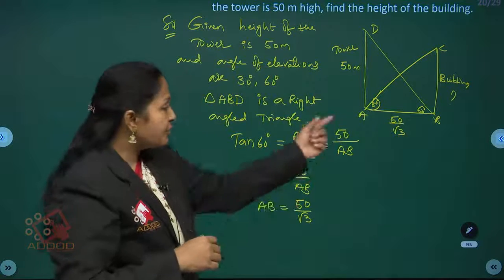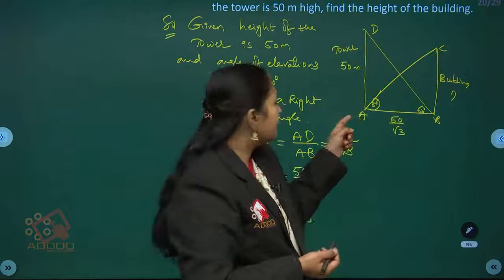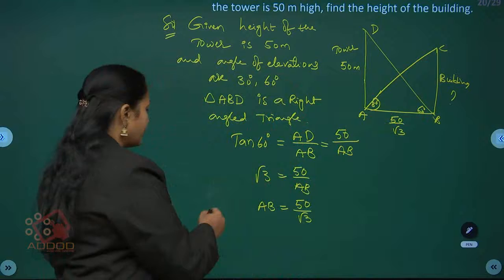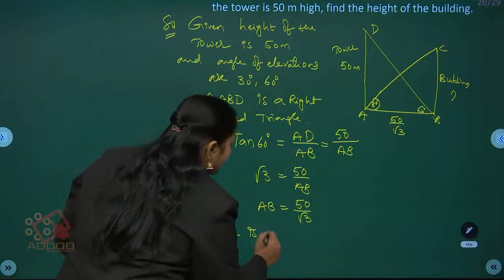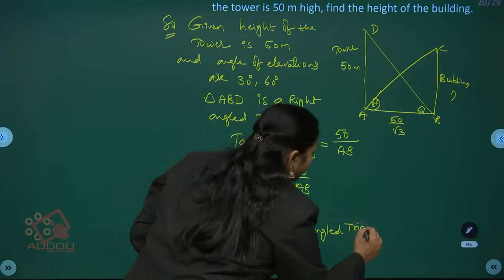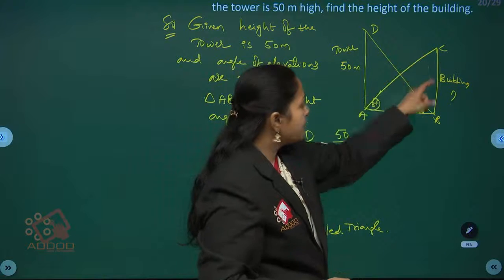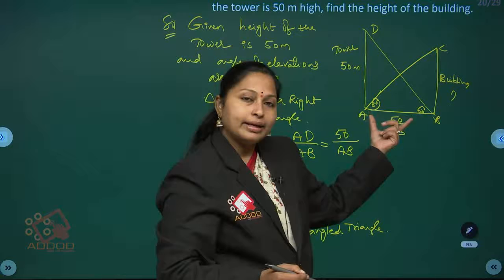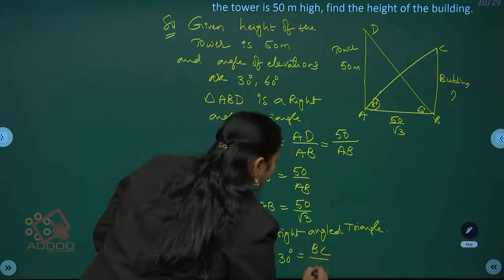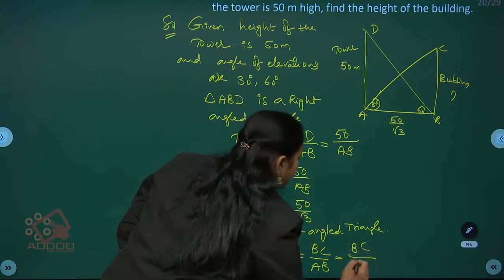Now let's find the height of the building by choosing another triangle. Triangle ABC is another right-angle triangle. With respect to 30 degrees, the opposite side is BC and the adjacent side is AB. Let's take tan 30 degrees: tan 30 degrees equals BC by AB. BC is the height of the building and AB is 50 by root 3.